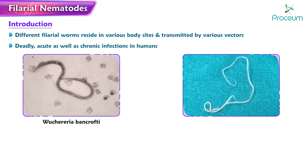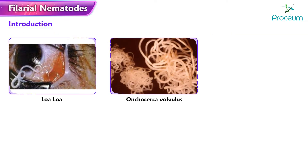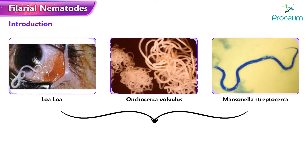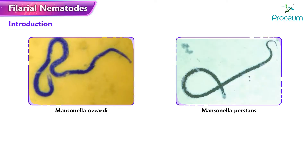Wuchereria bancrofti and Brugia malayi are the filarial nematodes that reside in the lymphatic system. Loa loa, Onchocerca volvulus, and Mansonella streptocerca are found in skin and subcutaneous tissue. Mansonella ozzardi resides in the body cavity.